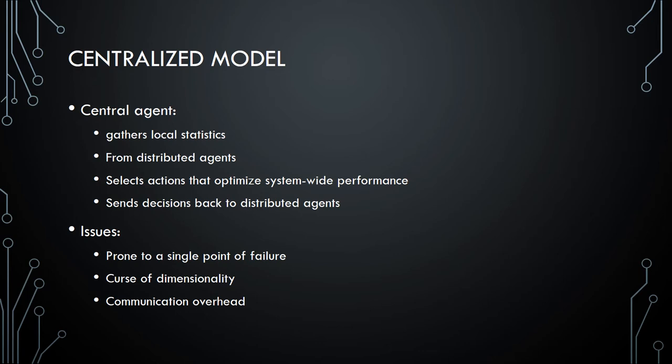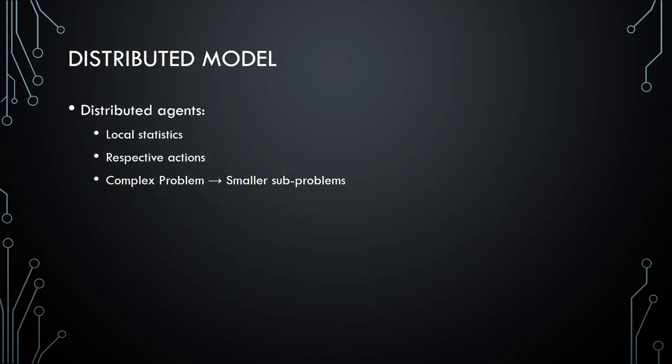Considering a real world scenario with a few thousand agents, it is difficult to analyze traffic in that scenario. In the distributed model, distributed agents such as each intersection handle local statistics and their respective actions. A complex problem is divided into smaller sub-problems, improving robustness and scalability.